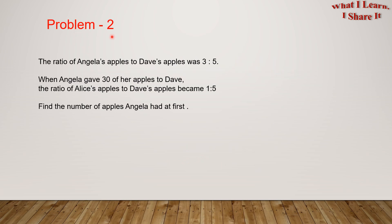Problem 2. The ratio of Angela's apples to Dave's apples was 3 is to 5. When Angela gave 30 of her apples to Dave, the ratio of Alice's apples to Dave's apples became 1 is to 5. Find the number of apples Angela had at first.